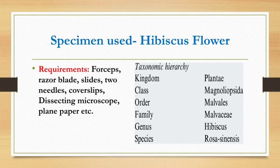The taxonomic hierarchy of hibiscus is: it belongs to kingdom Plantae, class Magnoliopsida, order Malvales, family Malvaceae, genus Hibiscus, and species rosa-sinensis.